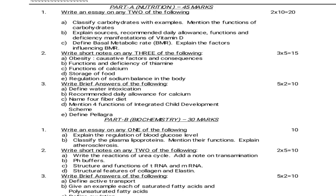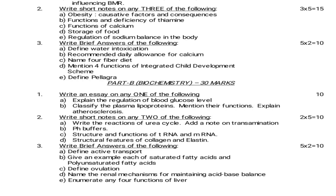Moving on to Biochemistry for December 2013 — 30 marks, Part B. Essay questions: Explain the regulation of blood glucose level. Classify the plasma lipoproteins, mention their functions, and explain atherosclerosis. Short notes — any 2 of the following: Write the reactions of urea cycle. Add a note on transamination. pH buffers. Structure and function of tRNA and mRNA. Structural features of collagen and elastin. Brief answers — 2 marks: Define active transport and give an example each of saturated fatty acids and polyunsaturated fatty acids. Define ovulation. Name the renal mechanisms for maintaining acid-base balance. Enumerate any 4 functions of liver.